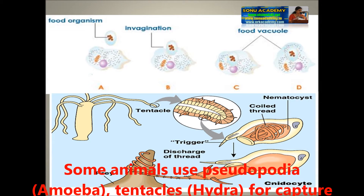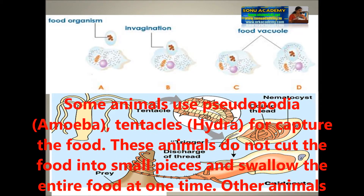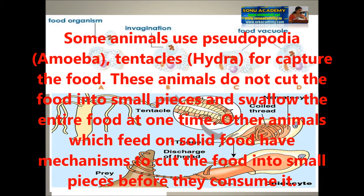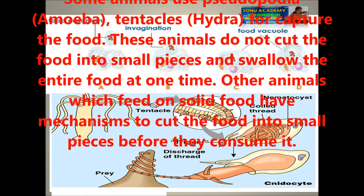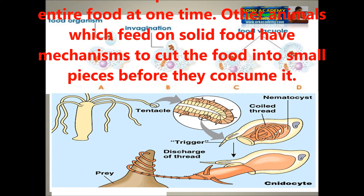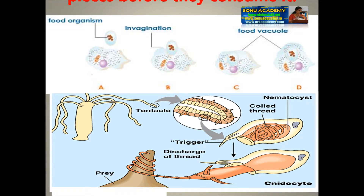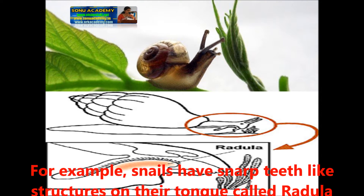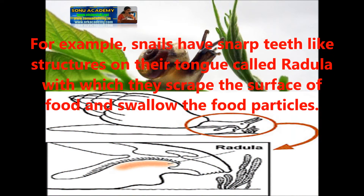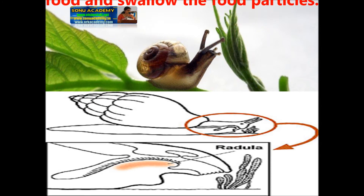Some animals use pseudopodia — for example, amoeba — or tentacles like hydra, for capturing and collecting food. These animals do not cut the food into small pieces; they swallow the entire food at one time. Other animals which feed on solid food have mechanisms to cut the food into small pieces first. For example, snails have sharp teeth-like structures on their tongue called radula, which help to scrape the surface of the food and swallow the food particles.